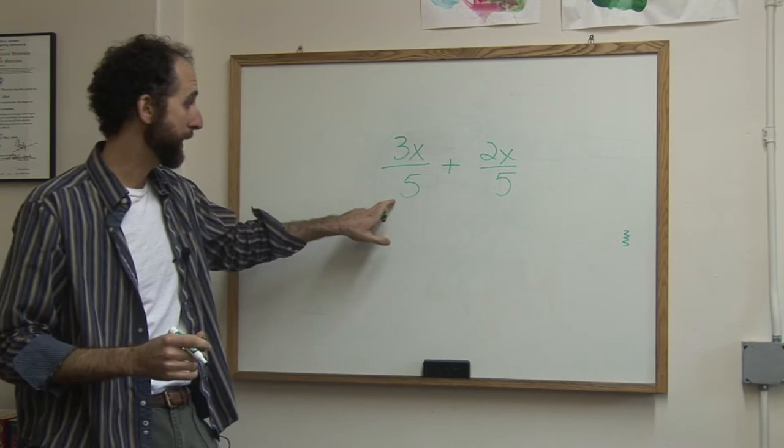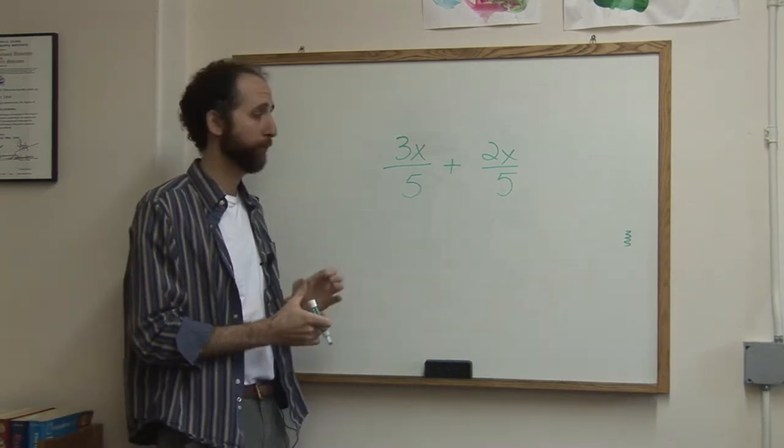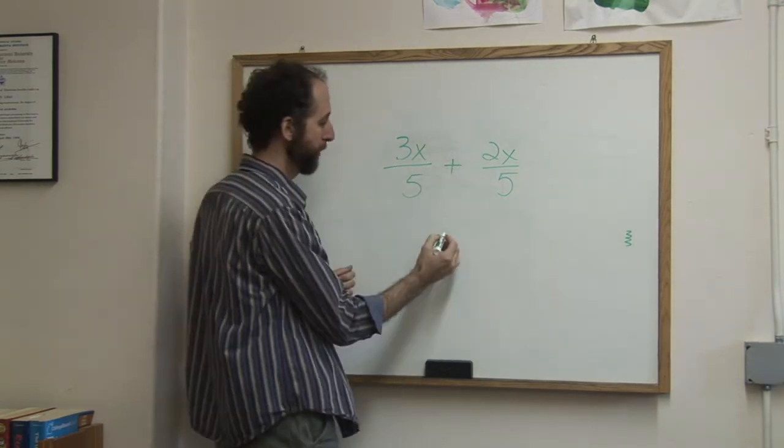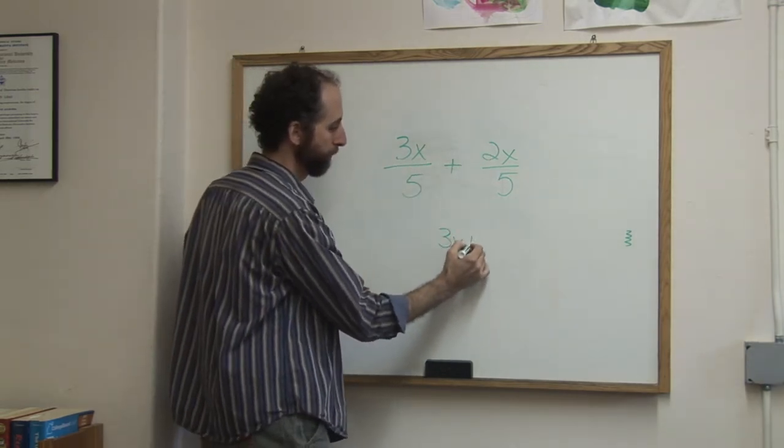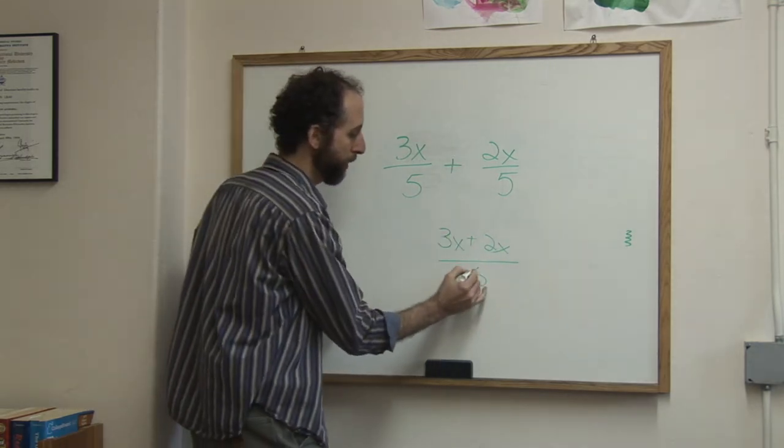This one already has a common denominator, so we're just going to go ahead and add right off the bat. We're going to get 3x plus 2x on top. Let's write that like this. And we've got our common denominator of 5, so that just goes on bottom.